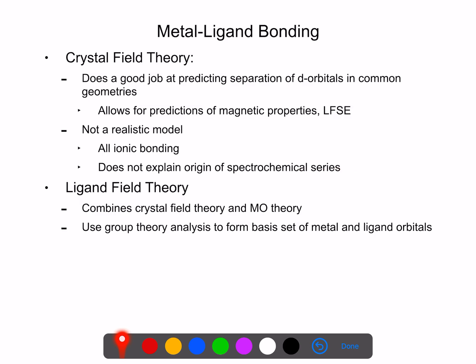So in order to understand this series and why it works, we have to go to what's known as ligand field theory. And ligand field theory is really an application of molecular orbital theory for these transition metal complexes. And from that, we're going to be able to understand better the bonding in these various complexes.